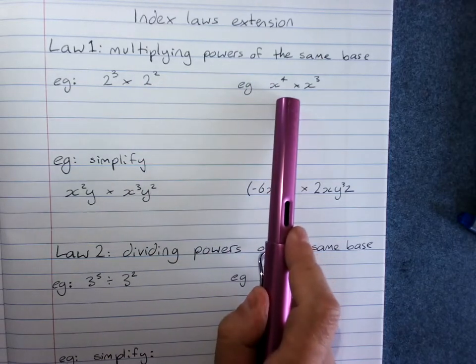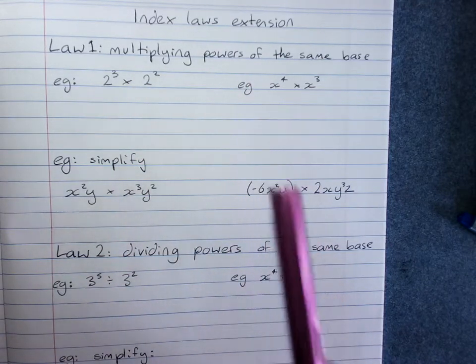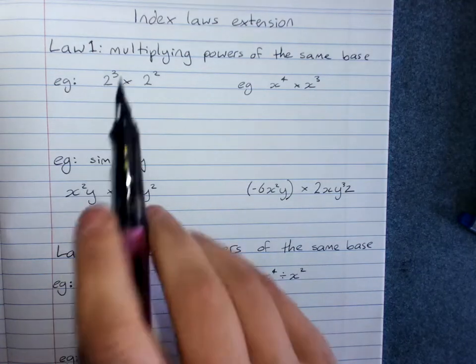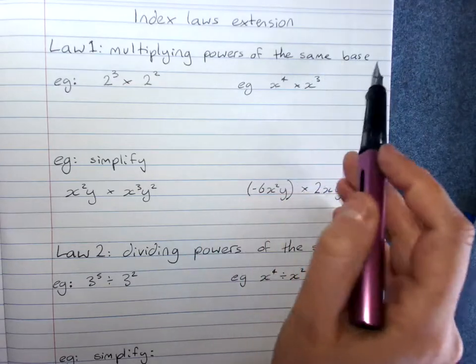Two examples here. For every index law we can show why it works by expanding a particular problem. These problems are multiplying powers of the same base.